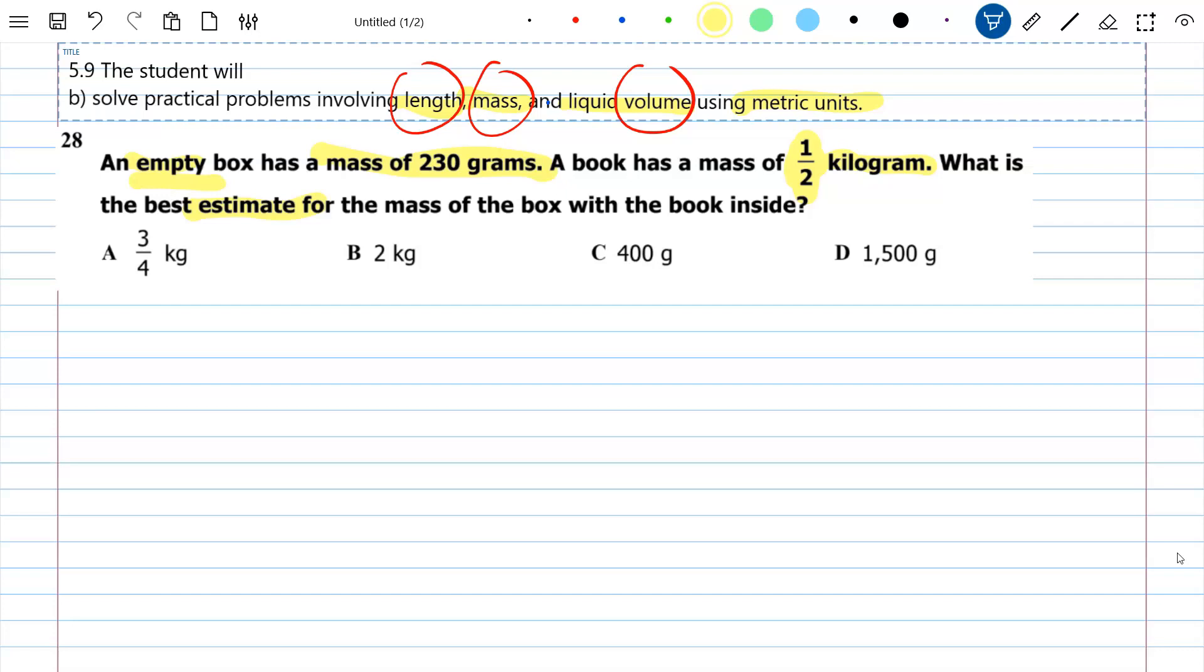So there's a couple things that I need to know here. First off, I need to be able to figure out what half of a kilogram is. So what I need to hopefully have memorized is that one kilogram because of kilo is equal to 1,000 grams. So there's our first step, but they wanted half of that.